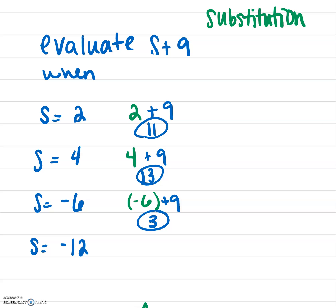For our last one, s equals negative 12. We're going to substitute negative 12 in for s, so now negative 12 is playing with the teammates plus 9. We can see what the result is going to be by taking negative 12 plus 9, which gives us negative 3.